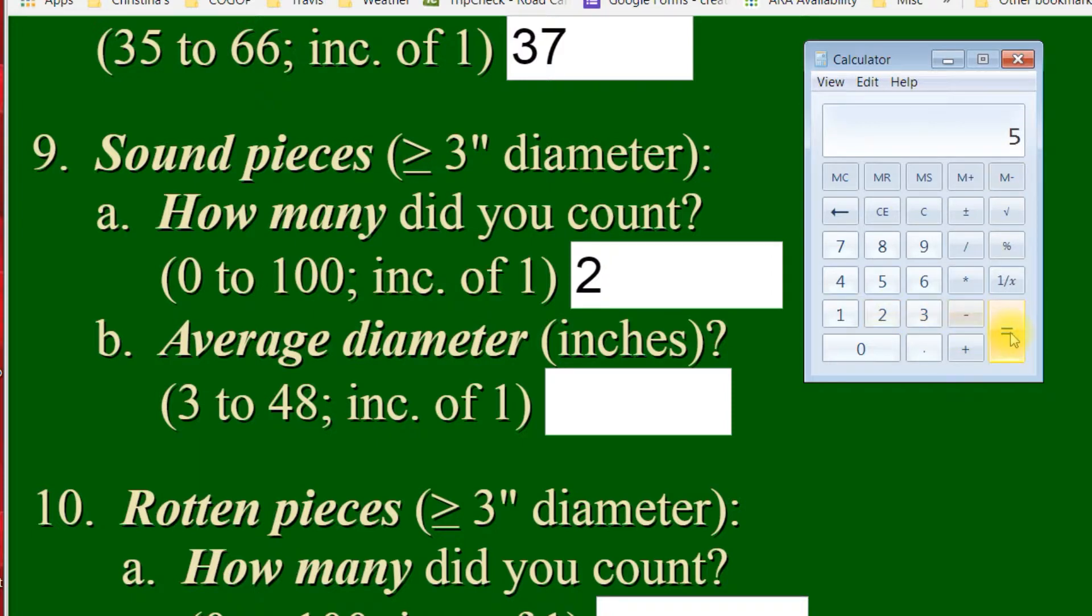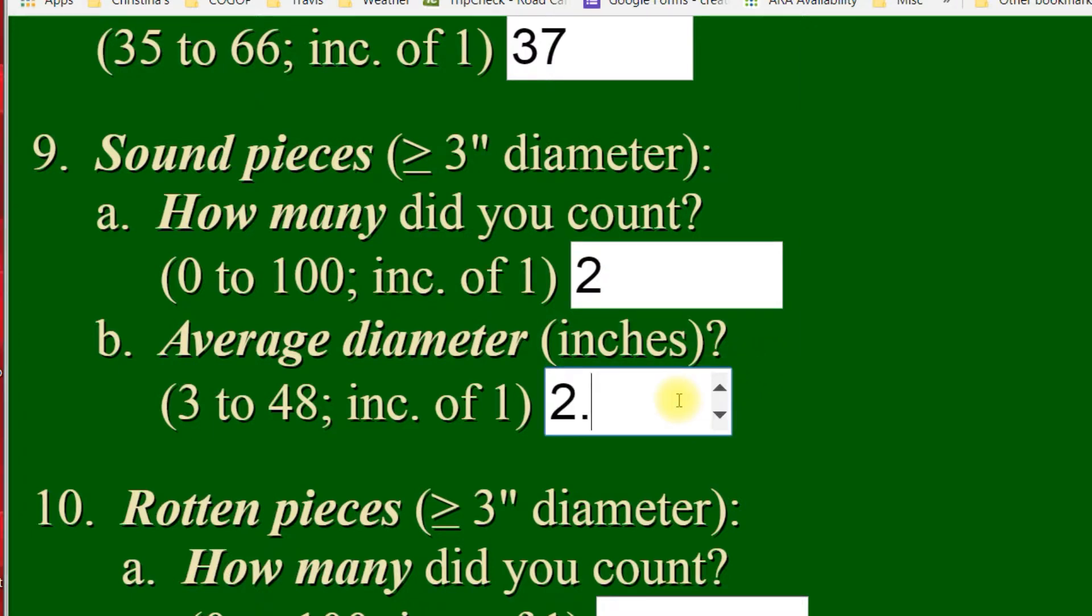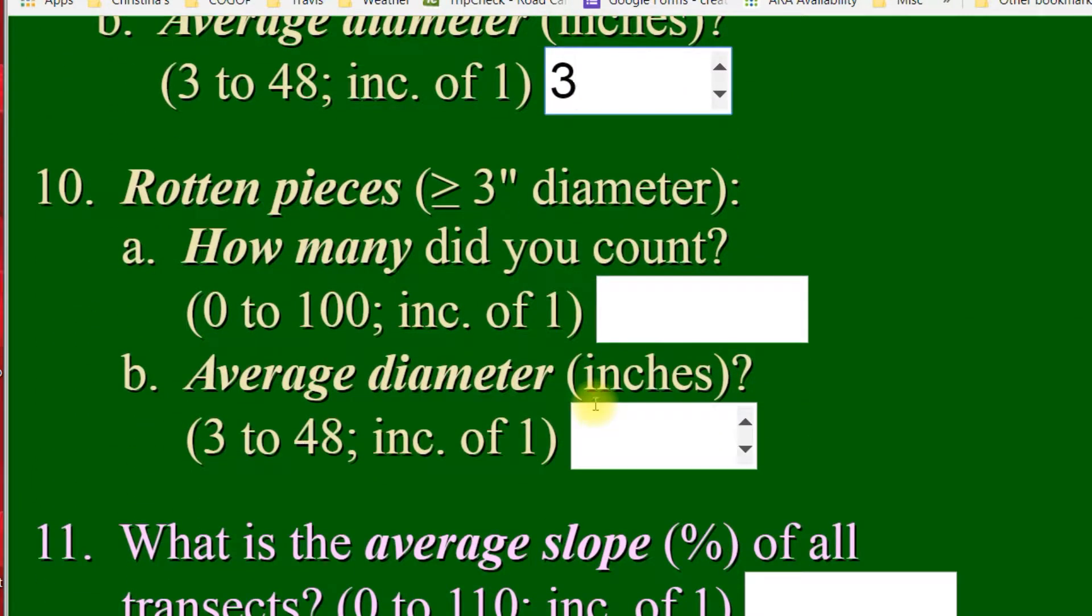Then let's say we have another one that's nine inches long. You click nine, click your little square root symbol. Square root of nine is three. So, now we have two and three. You add three plus two and you got five. That's the summation of your square root diameters. And then in order to get the average, you divide it by the number of pieces you had. So, you divide that five by the two and now you have 2.5. You go to put 2.5 in here and if you were to hit submit, your form would give you an error because it says here the increments are three to 48 inches, increments of one. So, you're not going to round down, you're going to round up to three inches. That is the average diameter of the square root of your sound pieces.